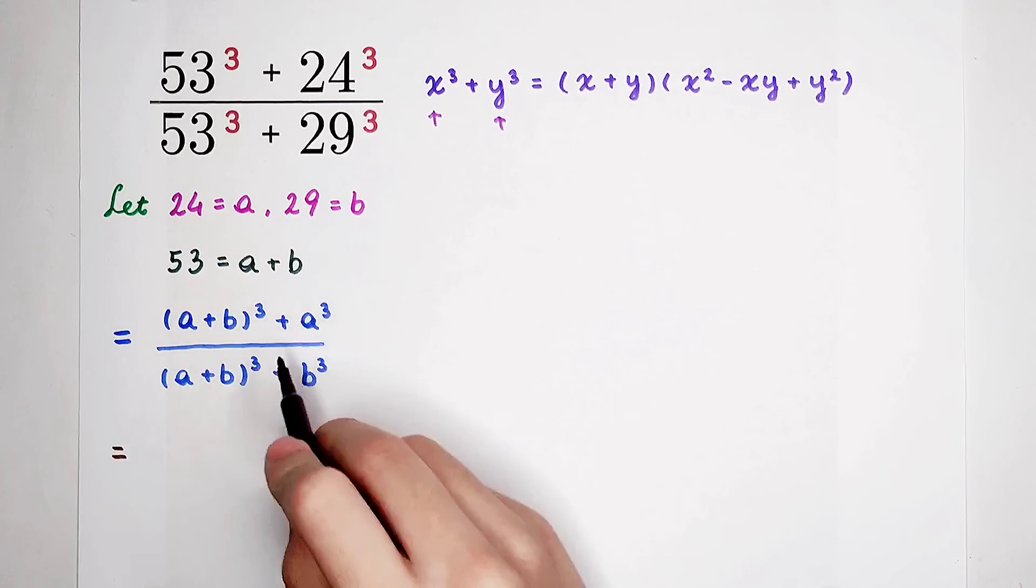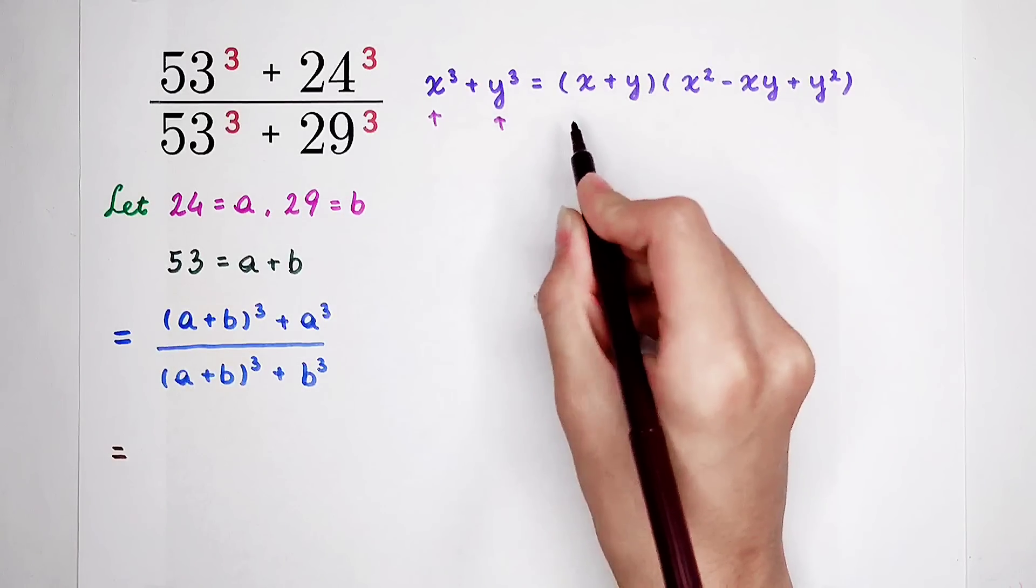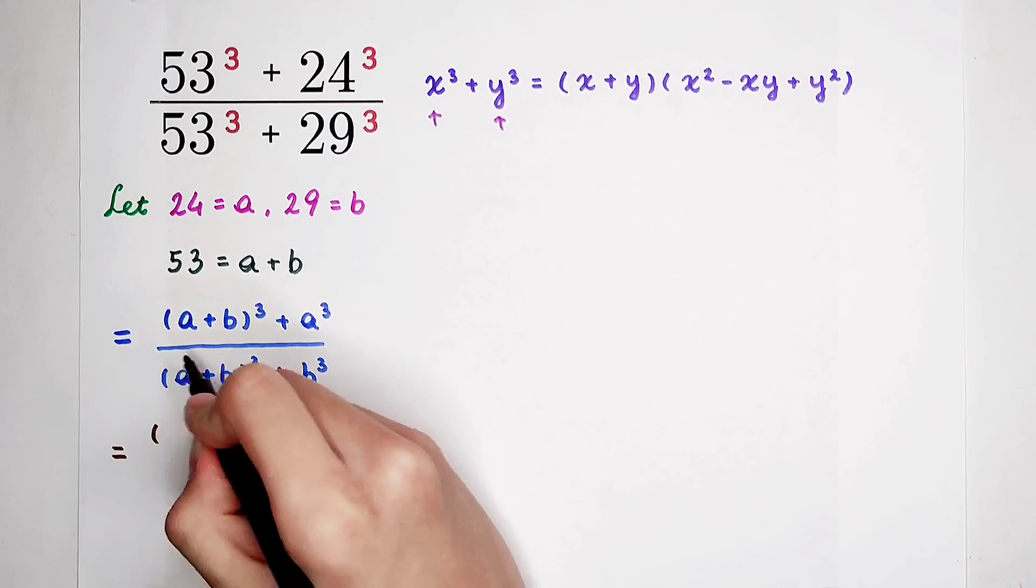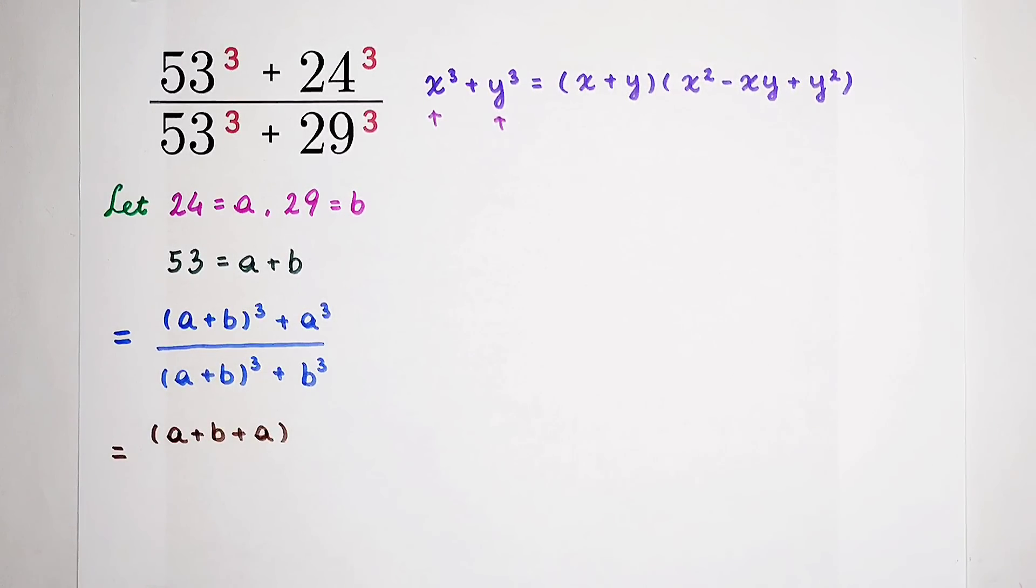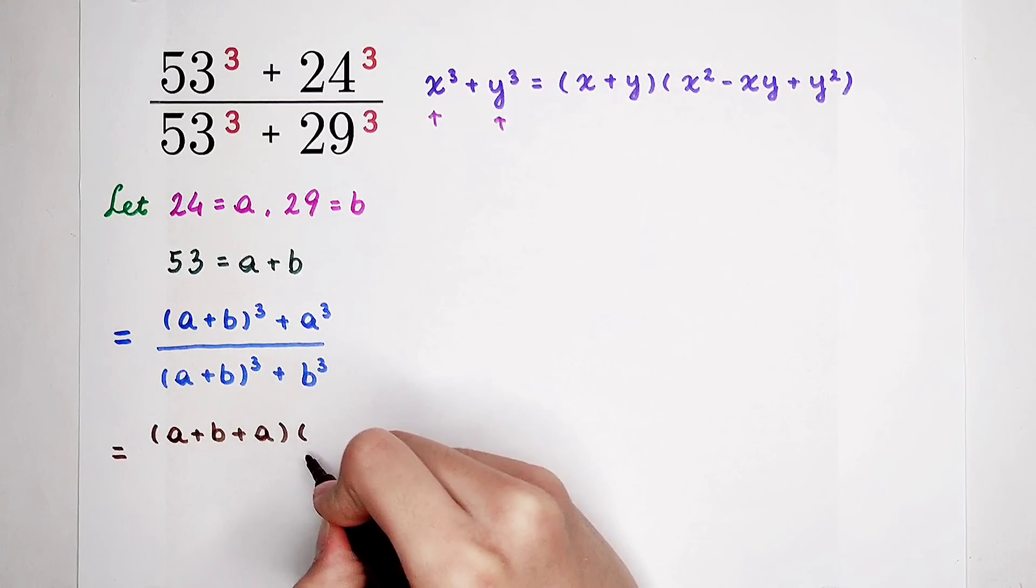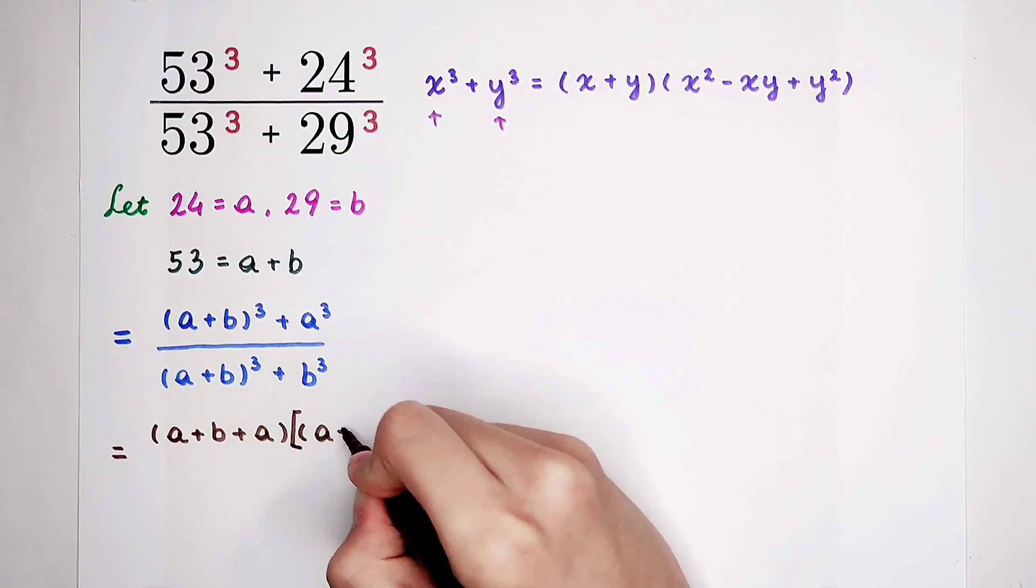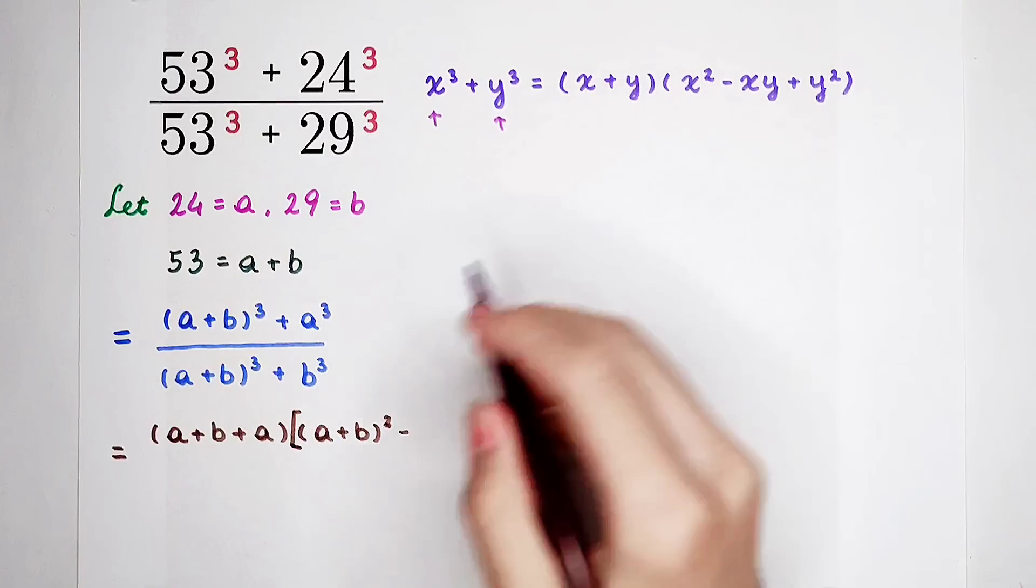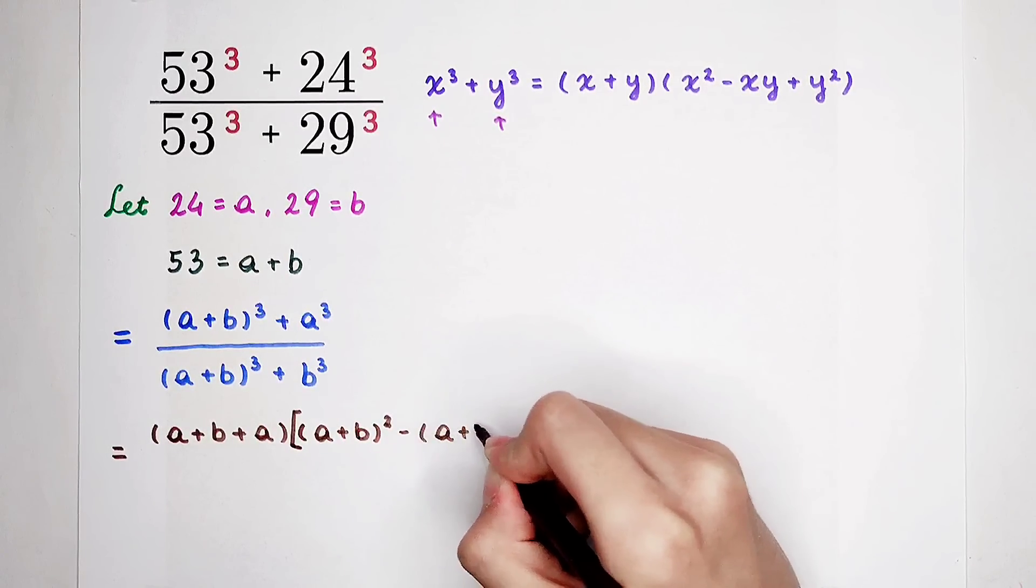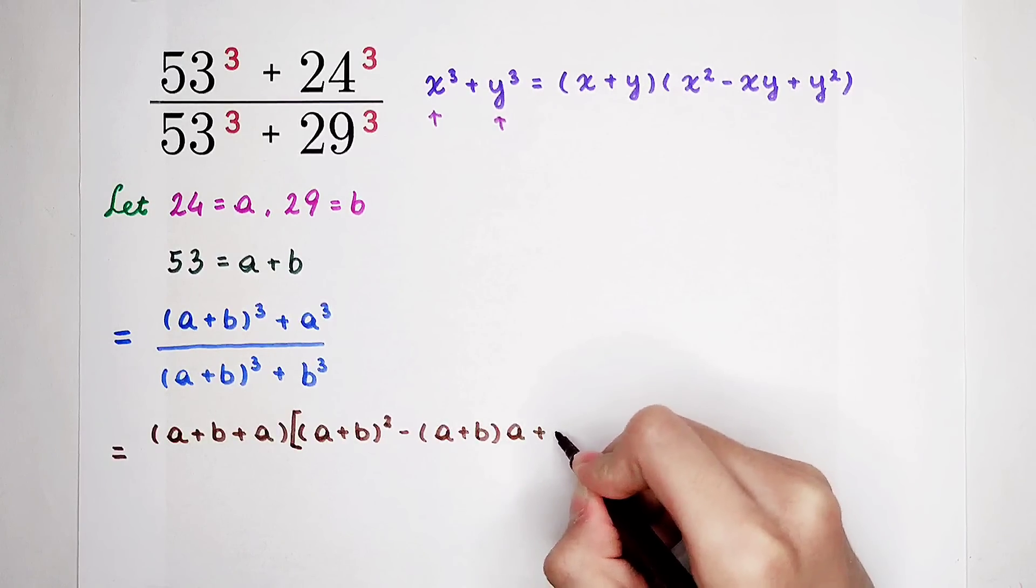So, for the numerator, a plus b all cubed, then plus a cubed. First, what is x plus y? It is a plus b is x, and then plus y is a. Mm-hmm, by using this formula. And then times, we have to add this. Why? Since x is a plus b. So, it is a plus b all squared. And then minus x times y. It is a plus b and then times a. And then plus y squared. It is a squared.